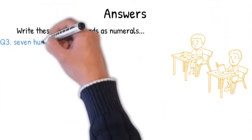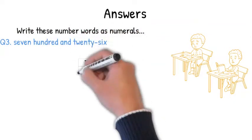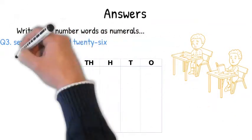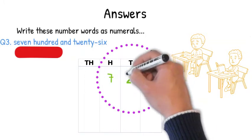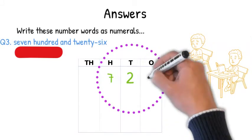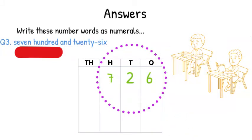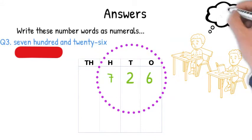So the next question was 726. Again, the 700 tells us that this is a three-digit number and that the seven should be in the position of the hundreds column. So we place that in there first. Finally, we have 26. So two tens should be in the tens column and six ones giving us 726.